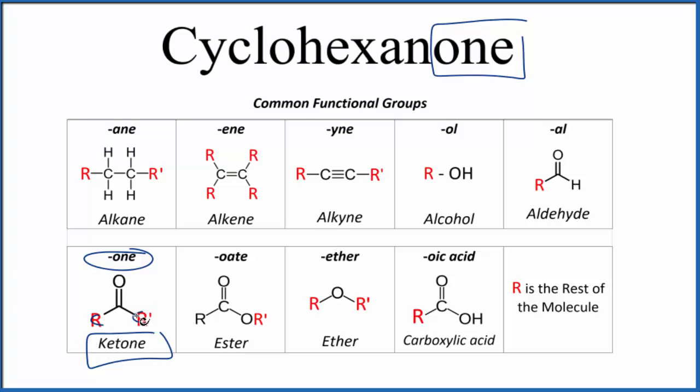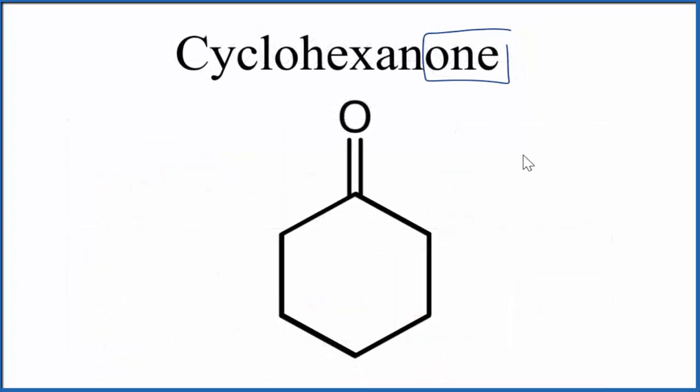So we're going to have a double bond on one of the carbons. Let's do that. So this would be cyclohexanone. We have our cyclo, the ring, hex, that means six. And this O-N-E at the end means we have a double bonded oxygen.